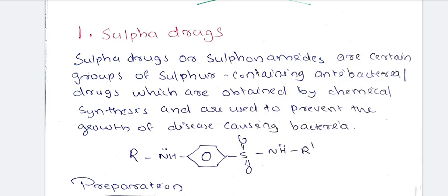What are Sulfa Drugs? Sulfa Drugs are sulfonamides — groups of sulfur-containing antibacterial drugs which are obtained by chemical synthesis. Sulfa Drugs are also called sulfonamides.